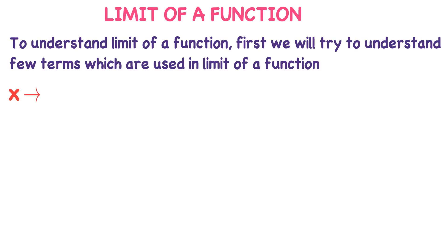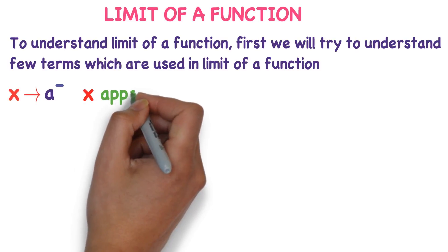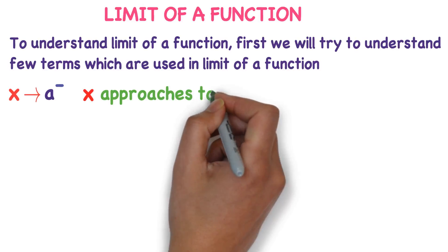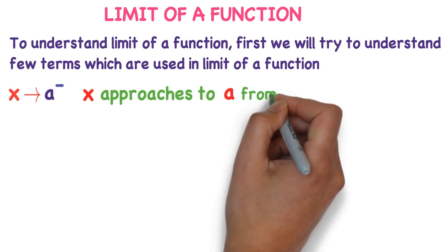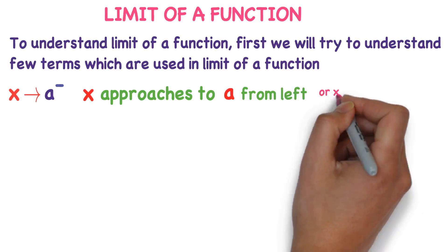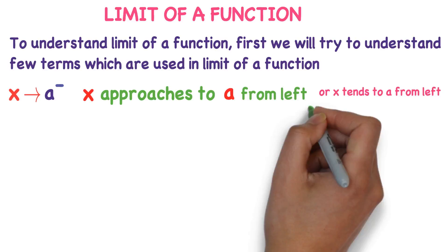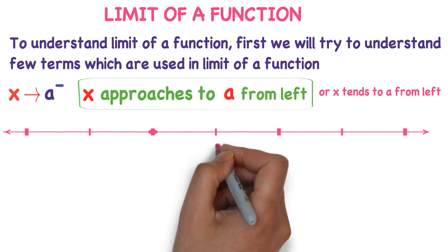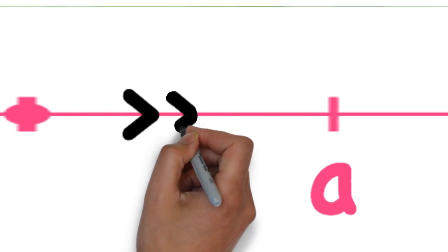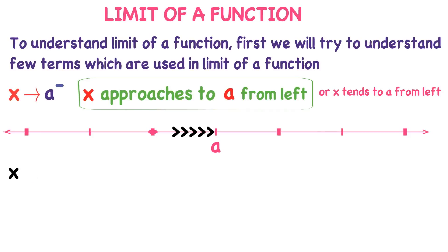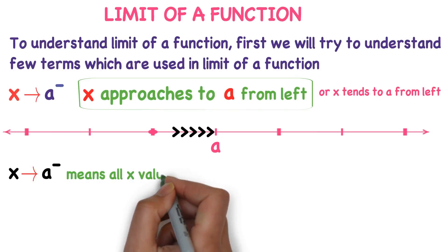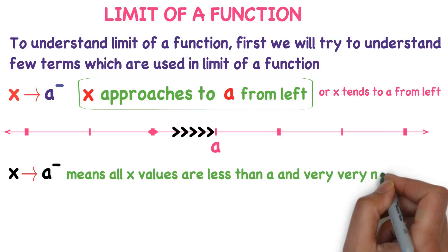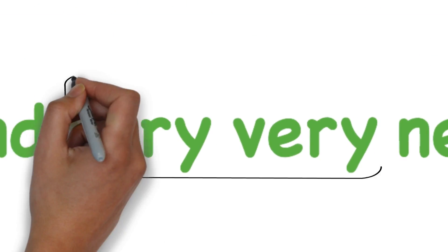First: x tends to a minus. What does this mean? We read it as 'x approaches to a from left' or 'x tends to a from left.' I will try to explain this on the number line. Here, a is some real number. X approaches to a from left means all x values are less than a and very very nearer to a.